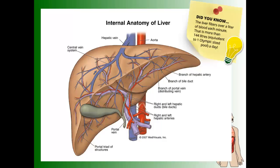Here is the anatomy of the liver. You can see there are many arteries and veins within it, meaning lots of capillaries, which means it's very much responsible for cleaning the blood. There's a connection between the kidney and the circulatory system, and the liver and the circulatory system — both responsible for moving wastes and toxins. A little fact: your liver filters over a liter of blood each minute, which is more than 144 liters a day — essentially one Olympic-sized pool of blood filtered each day.